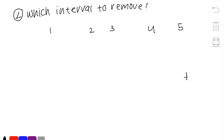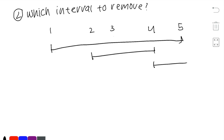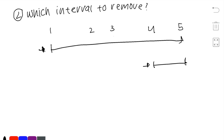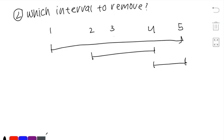However, let's try another example with intervals 1-5, 2-4, and 4-5. Sorting by start time, we start with 1-5, then 2-4 overlaps so we remove it, then 4-5 overlaps with 1-5 so we remove it too — giving an answer of 2. But if we simply remove just the first interval 1-5, we're left with 2-4 and 4-5 which are non-overlapping, giving an answer of 1. So sorting by start time doesn't work.